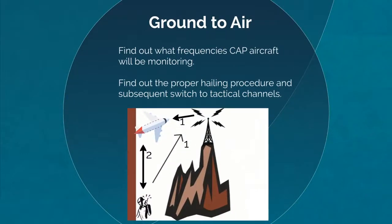CAP aircraft are only monitoring a few channels at a time, so be sure to know which ones those are, and determine the hailing procedures to contact them. A typical hailing procedure: Step 1, communications go through the repeater first, where both parties establish contact and agree to move to a tactical channel. Step 2, establish contact on the tactical channel and continue communications. Doing it this way helps reduce overall traffic through the repeaters.